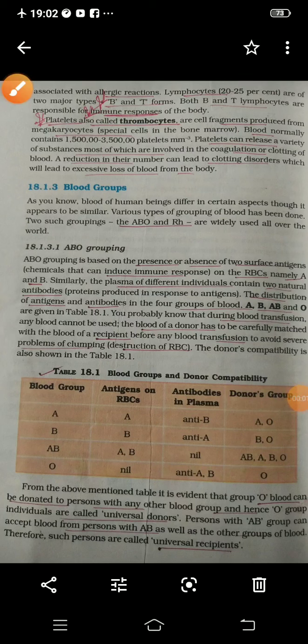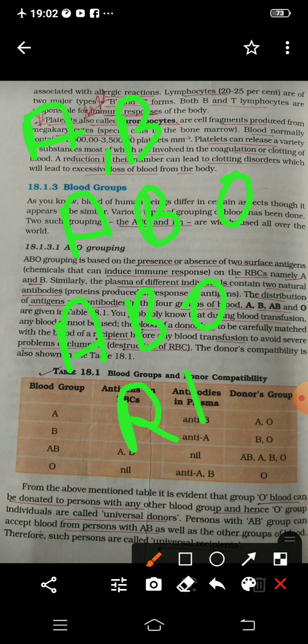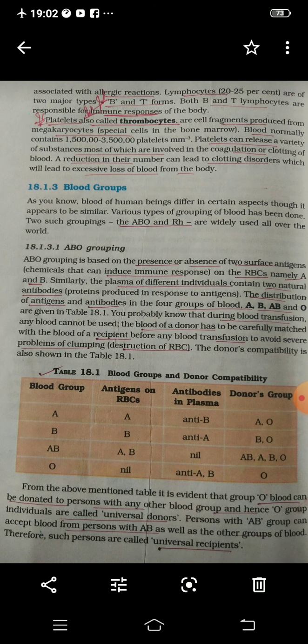Students, today we will discuss the various kinds of blood groups. As we all know, humans have four types of blood groups: A, B, AB, and O. These four types have various grouping patterns, and two such groupings are ABO and Rh. On the basis of these, we can categorize blood groups.